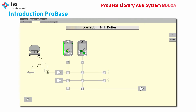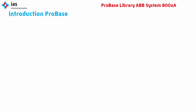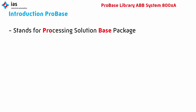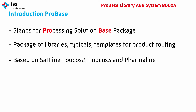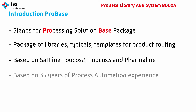Welcome to our video about the ProBase library for ABB System 800XA. In this video we will give you a short introduction about the benefits of the ProBase library. ProBase stands for Processing Solution Base Package. It is a package of libraries, typicals and templates for product routing. ProBase is based on Satellite Focus 2, Focus 3 and PharmaLine, so ProBase can rely on 35 years of processing automation experience.